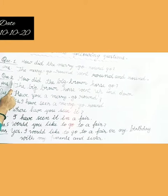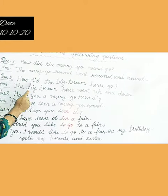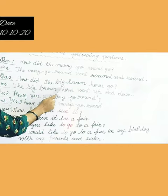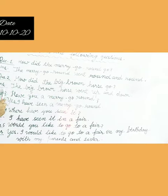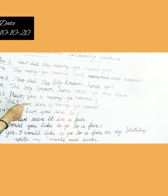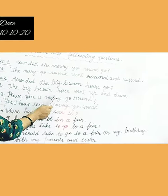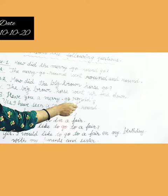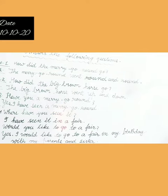Question number 2 is: how did the big brown horse go? The answer is: the big brown horse went up and down.